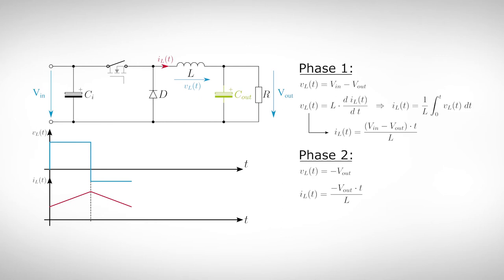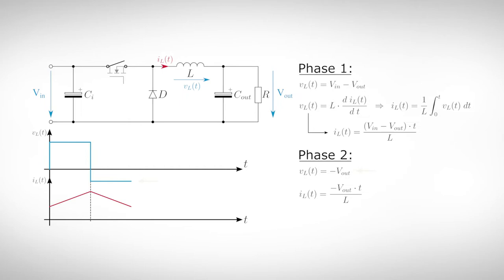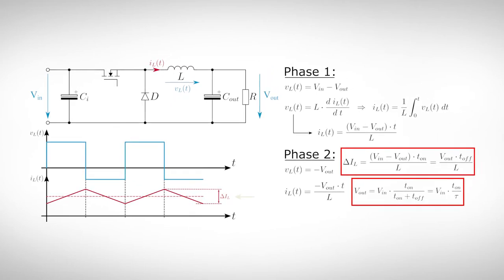As predicted by the law of induction, the current through the inductor falls linearly and flows into the output capacitor, where it is stored. If we take a look at the voltage loop, we can see that the voltage across the inductor changes its polarity. Subsequently, the current through the inductor rises and falls continuously. This is called ripple current, and its mean value is the DC current, which flows into the load.